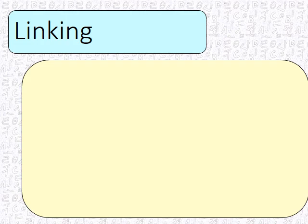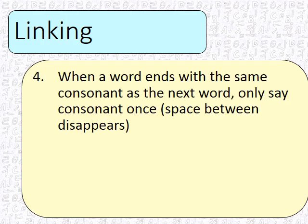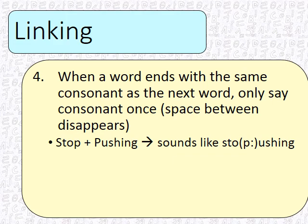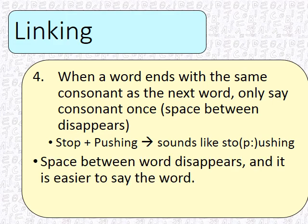The fourth form of linking is when a word ends with the same consonant as the next word begins with — you only say the consonant once, and the space disappears. An example of this is 'stop pushing': it sounds more like 'stop-pushing.' The second P and the space between words disappears, and it becomes much easier to say.